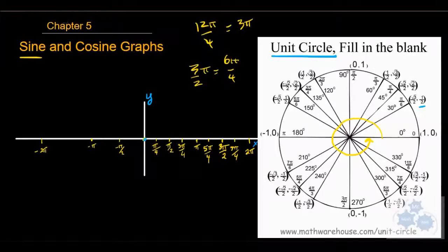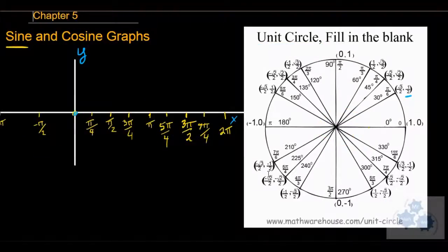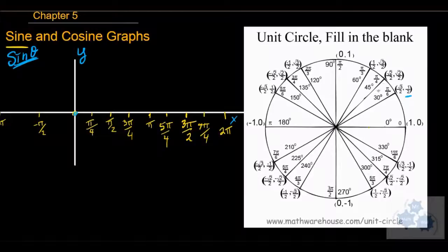Now we can fill out this last part. Let's go to 3 pi over 2 on the negative side and call that a day. I want to focus on this part of the graph. We're going to take a look at all of this and start with sine first. We're going to place the points on the unit circle on the Cartesian plane and see what happens. We're going to graph sine theta here.